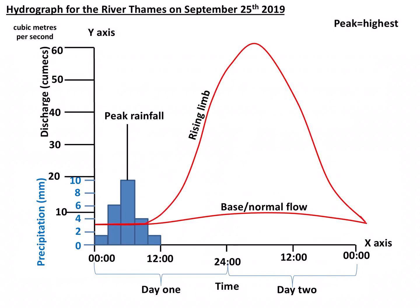The rising limb starts around 11am on day one until it reaches its peak discharge at 5am the next day. The discharge will then return back to normal flow via the falling limb.